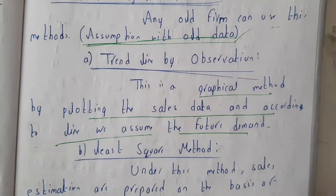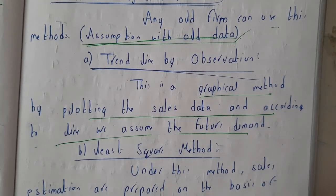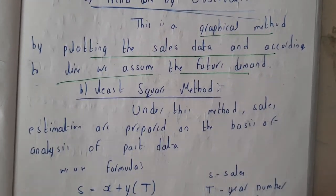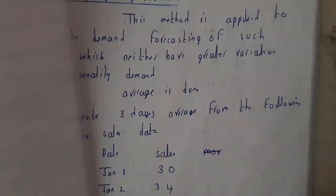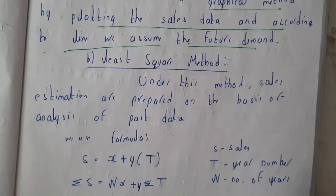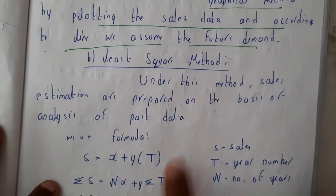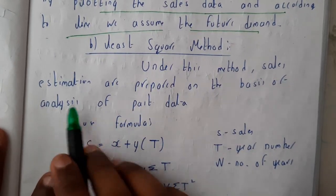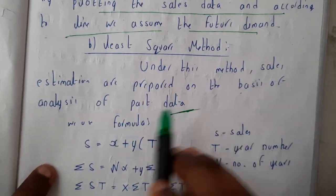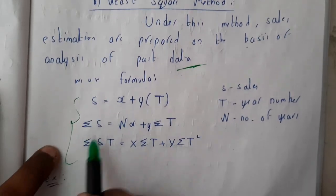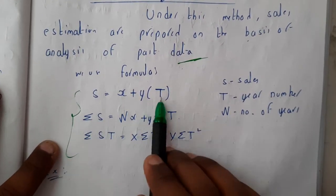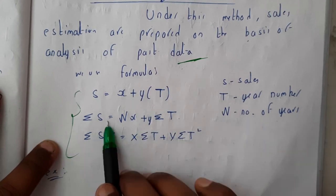Similarly, the least square method is one of the important and easy problems — please practice this. Under this method, sales estimations are prepared on the basis of analysis of past data. We'll be using three formulas: S = x + yT, where T is the time.